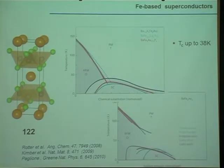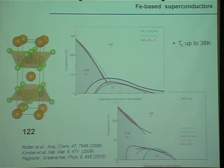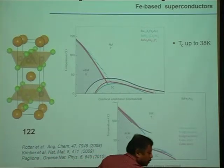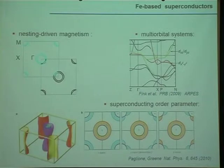Soon after this discovery, many other families of iron-based superconductors were found, like barium iron arsenide (BaFe₂As₂), called the 122 materials. These materials again show a very similar phase diagram: for the undoped case, a region where the system shows a long-range spin density wave, and by doping the system in different ways, you observe the superconducting dome. This superconductivity can also be obtained by putting the parent compound under pressure. As theoretical physicists, we would like to find the universality of this class of materials — what can we say about what is universal and what is non-universal.